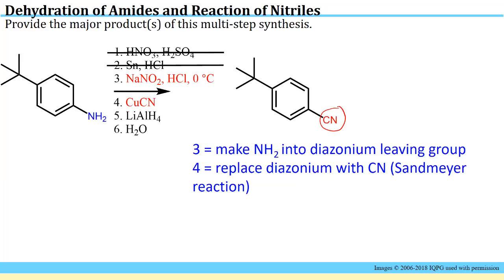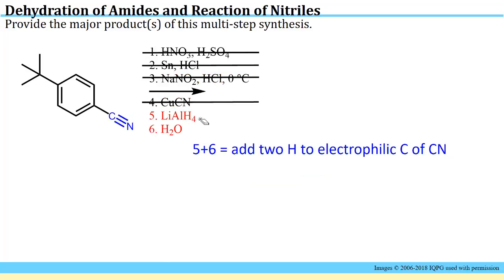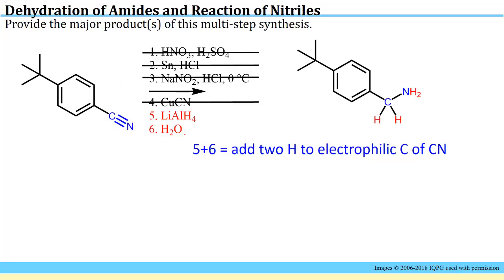Moving on to steps five and six: step five adds two nucleophilic H's to the electrophilic carbon of the C≡N — the carbon with a partial positive charge attracts the hydride units. The second step provides the protons necessary after those steps. You've replaced the two pi bonds with sigma bonds to H's, the nitrogen gets protonated, and now you have your final product after all six steps.